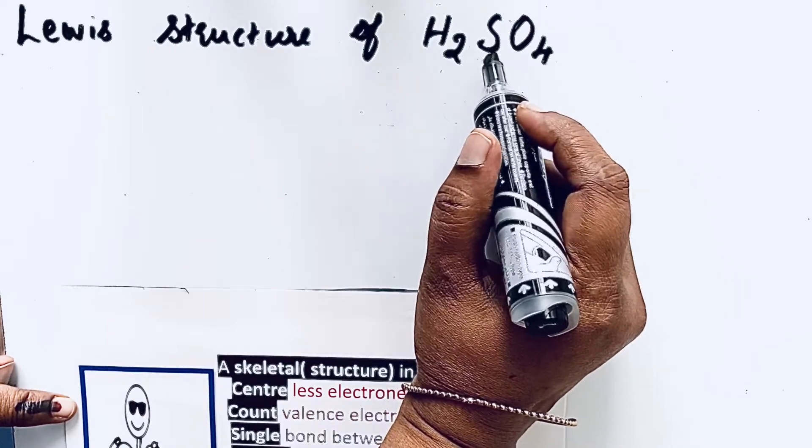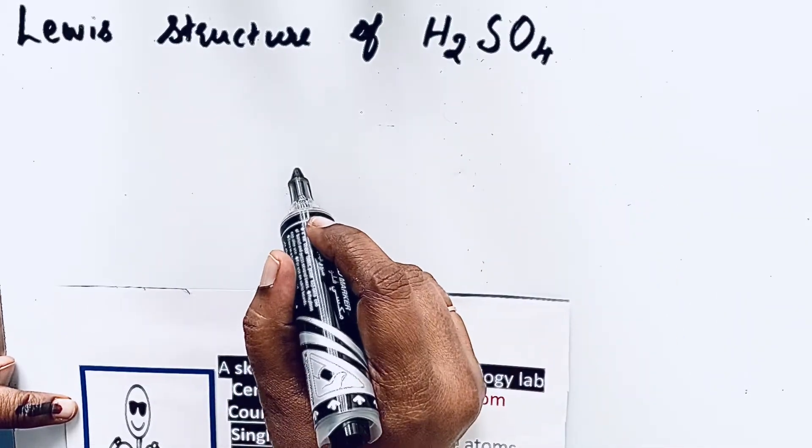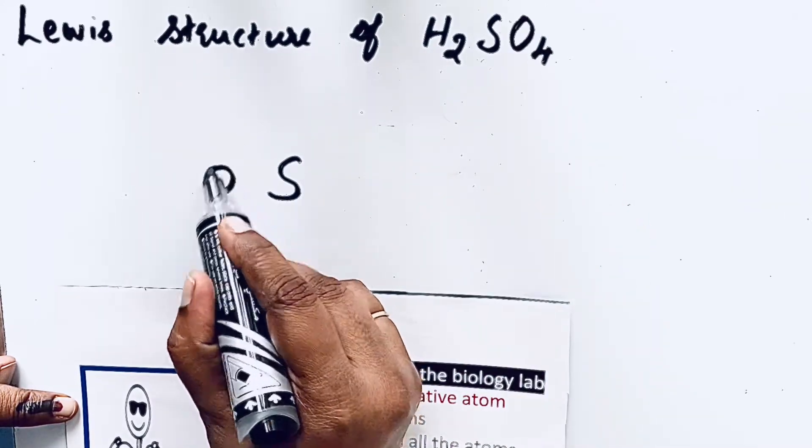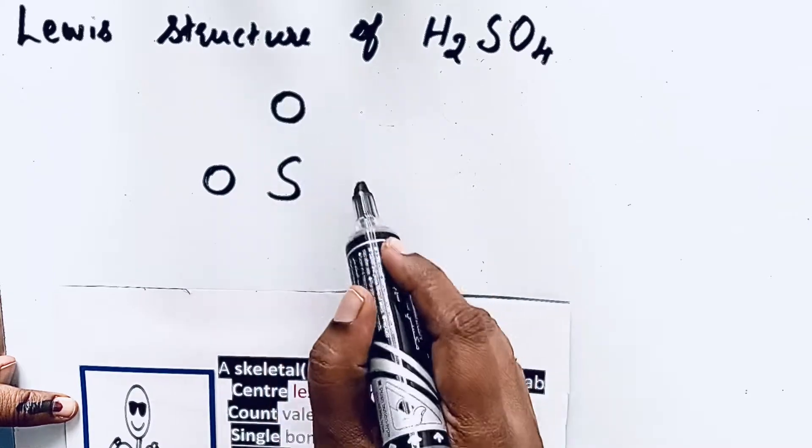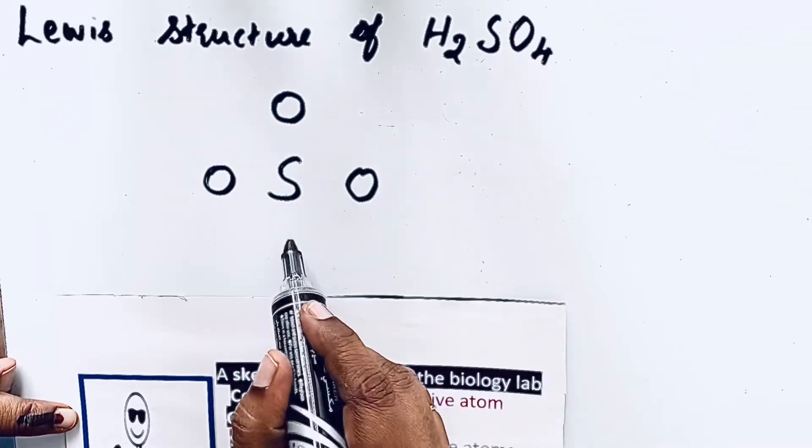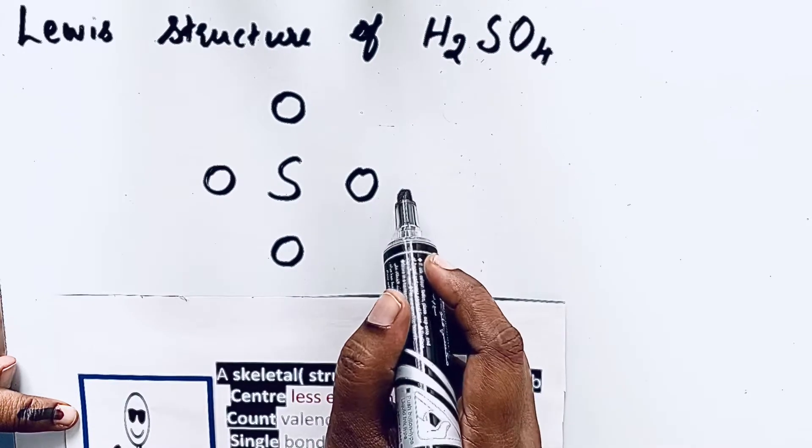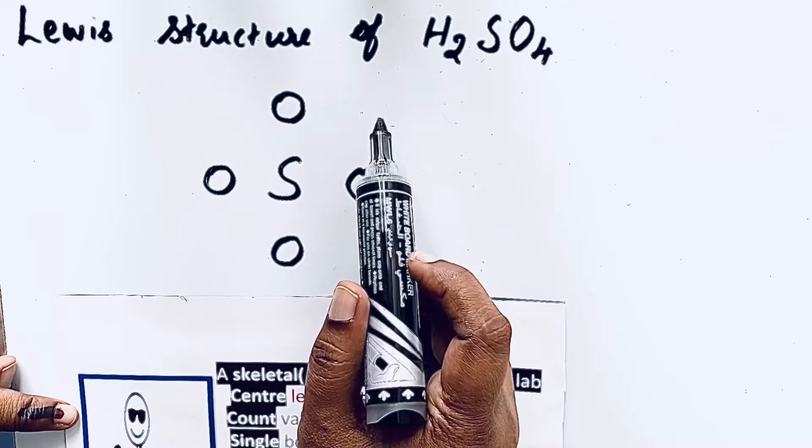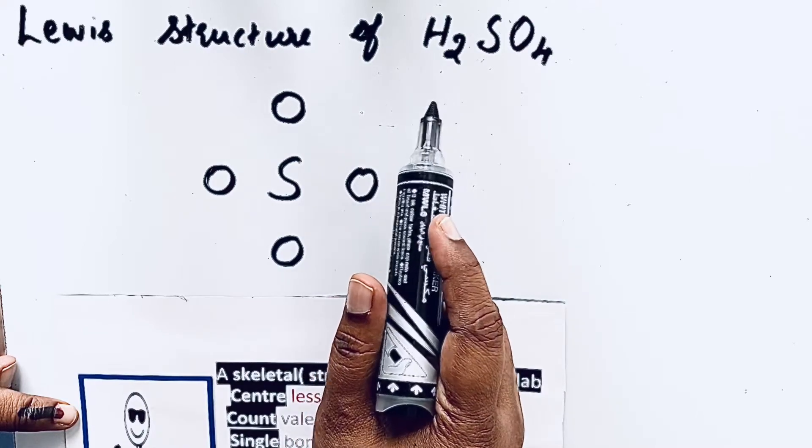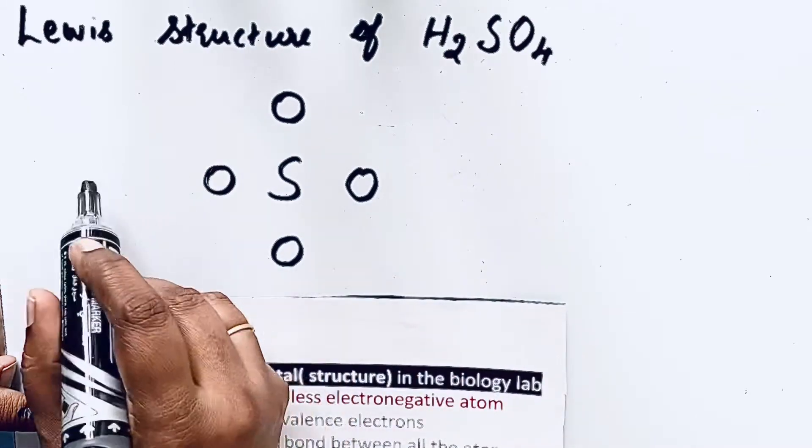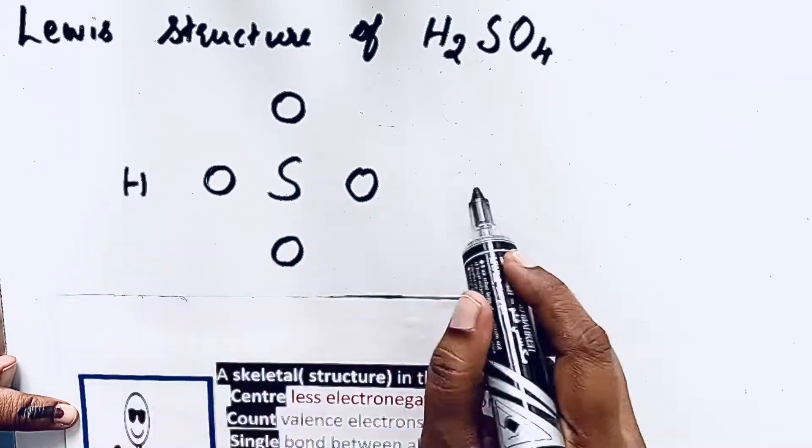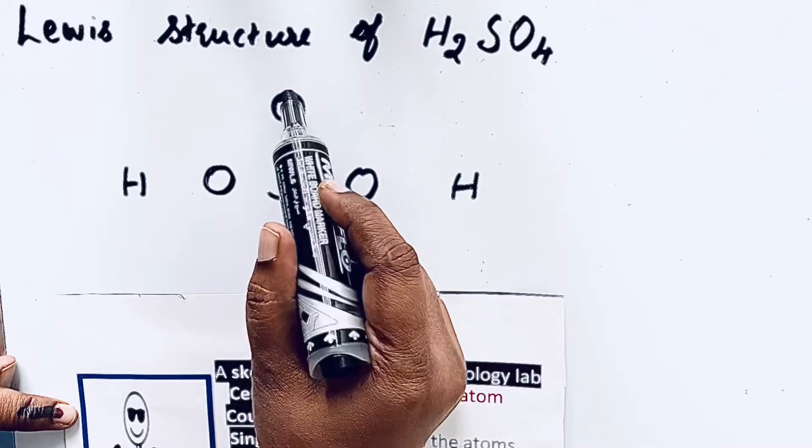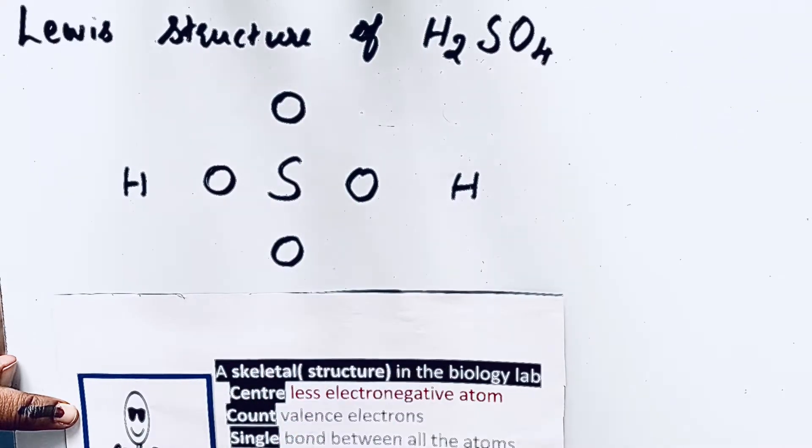Among sulfur and oxygen, sulfur is less electronegative, so let us write sulfur in the center. Then oxygen we are going to write just around sulfur. Here you may think why are you writing hydrogen next to sulfur, because H2SO4 is an acid, so the hydrogen should attach to the highly electronegative atom, that means oxygen. So hydrogen we can write here or here. You can write it here or on the down oxygen atom also.